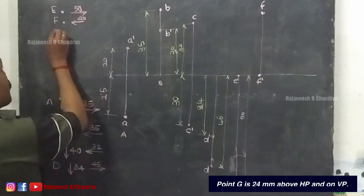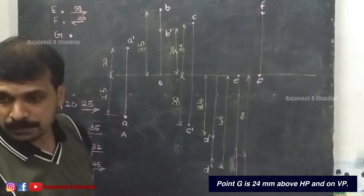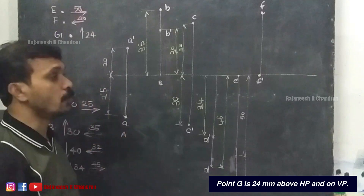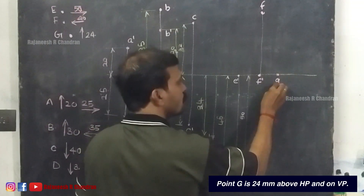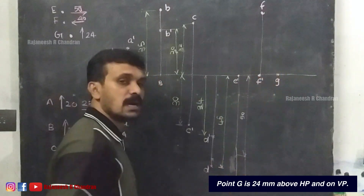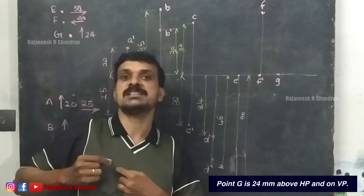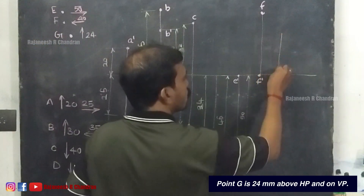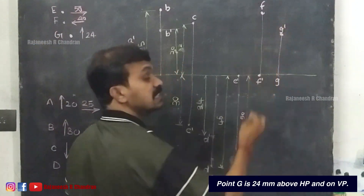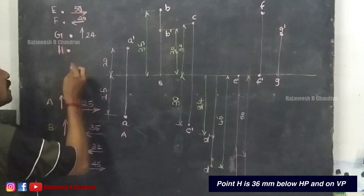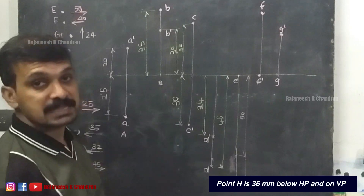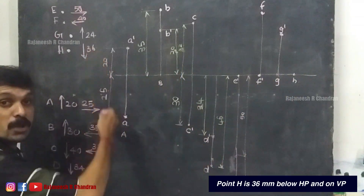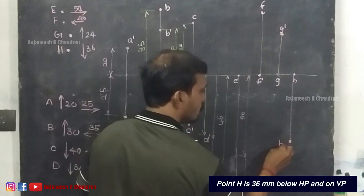The next question: point G is on VP and 24mm above HP. Since point G is on VP, the distance from VP is zero, so the point will be at the XY line. It is 24mm above HP, so mark 24mm above the XY line and name it G dash. Next, point H is on VP and 36mm below HP. Since it is on VP, mark H on the XY line. 36mm below HP means below the XY line — this distance will be 36 and this point will be H dash.